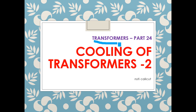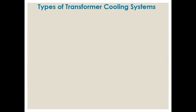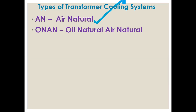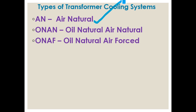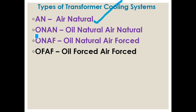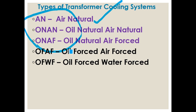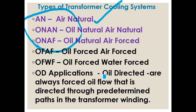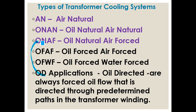Welcome to transformers part 24, video on cooling of transformers. This is the 12th video on cooling of transformers. If you are seeing this for the first time, please see part 1 before this. Types of transformer cooling systems we have seen: air natural (AN), oil natural (ONAN), oil natural air forced (ONAF), and oil forced air forced (OFAF). Now we will discuss oil forced water forced and oil directed application.